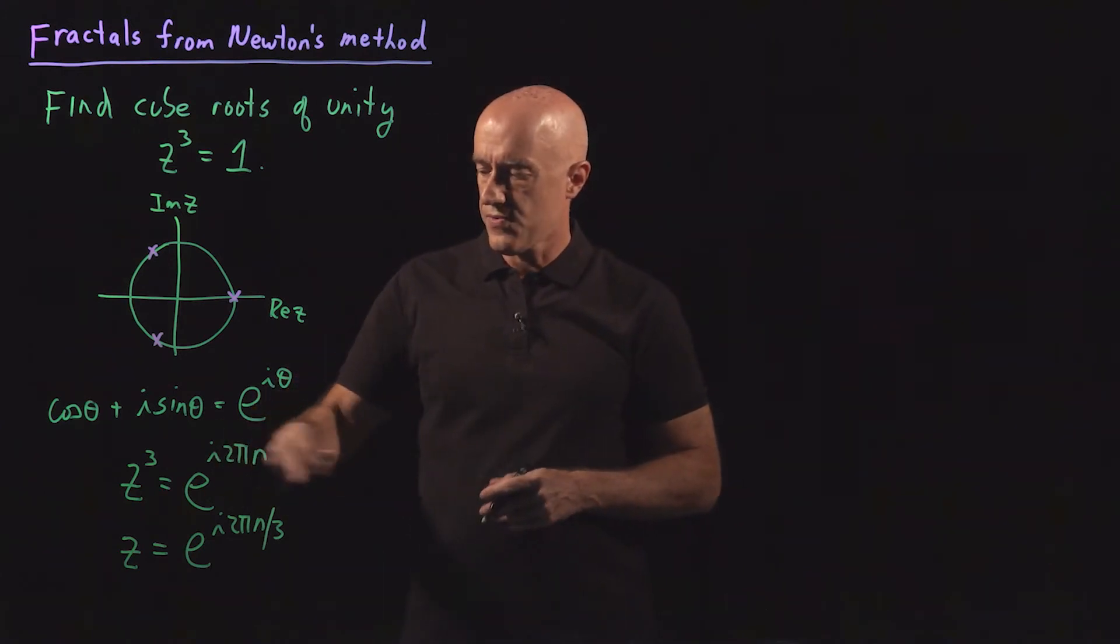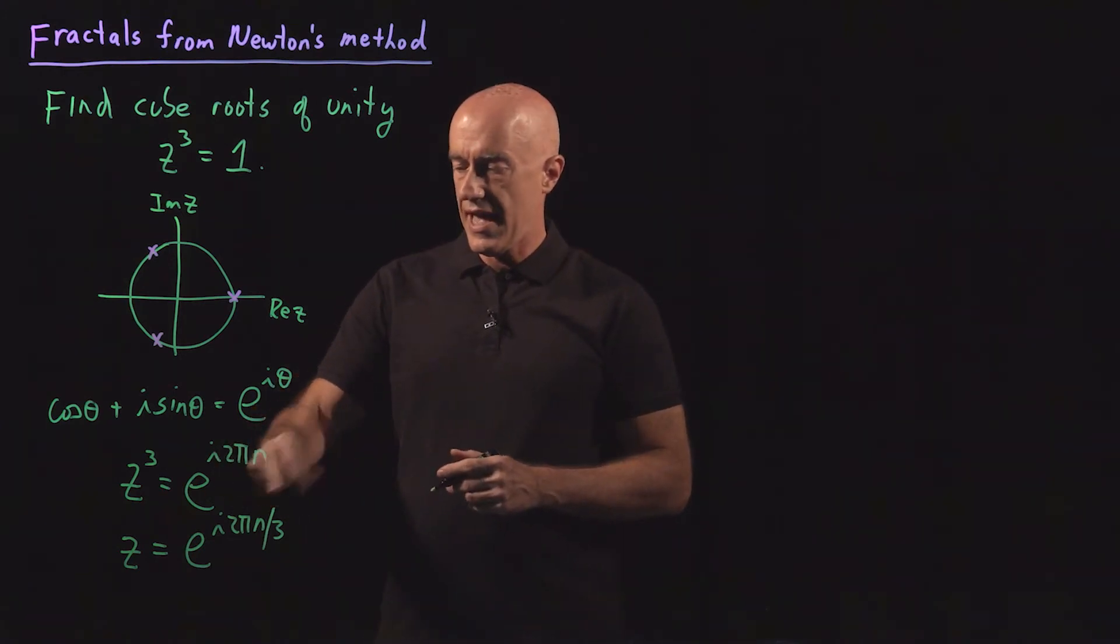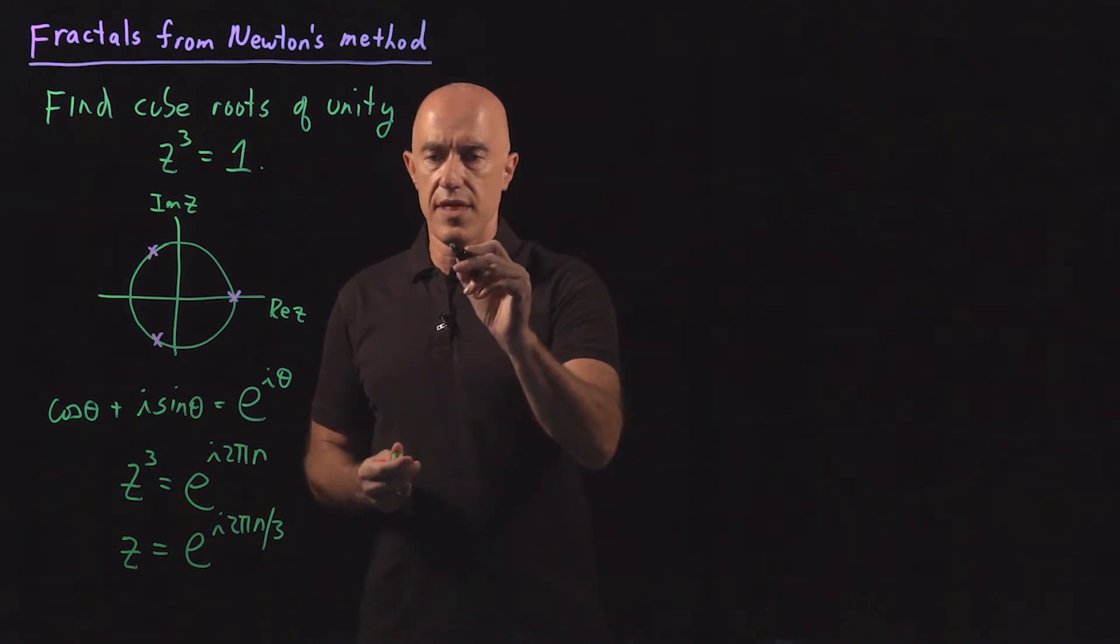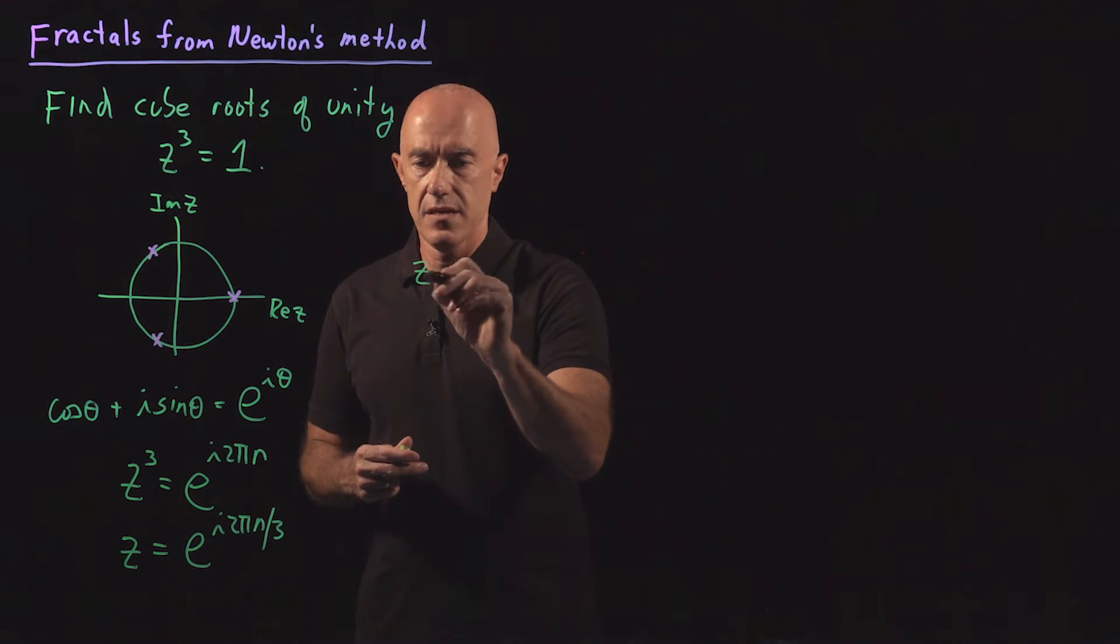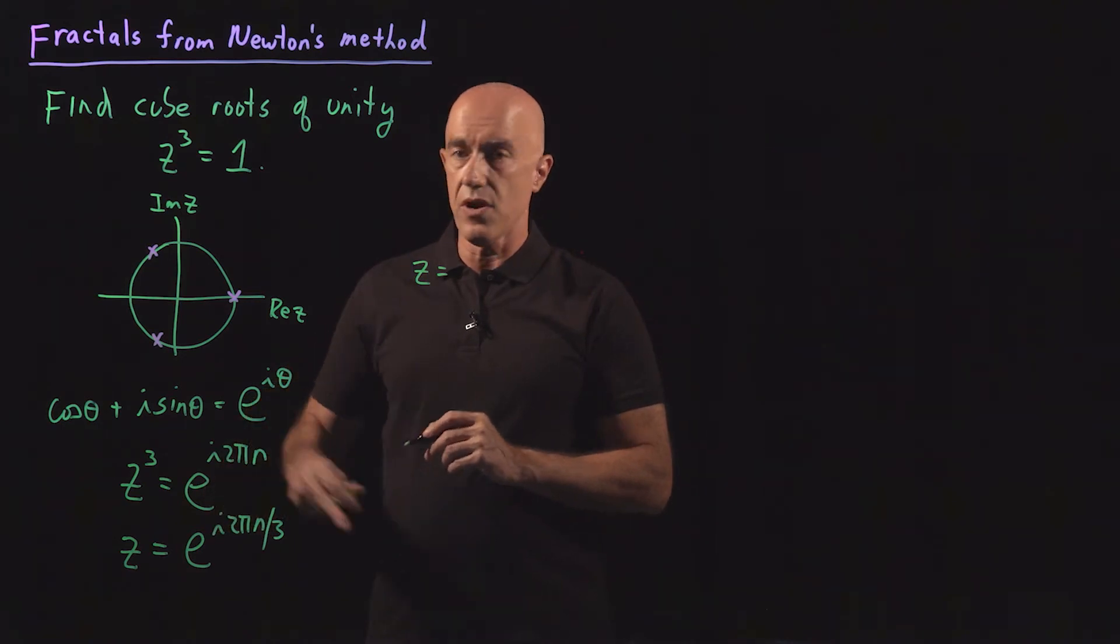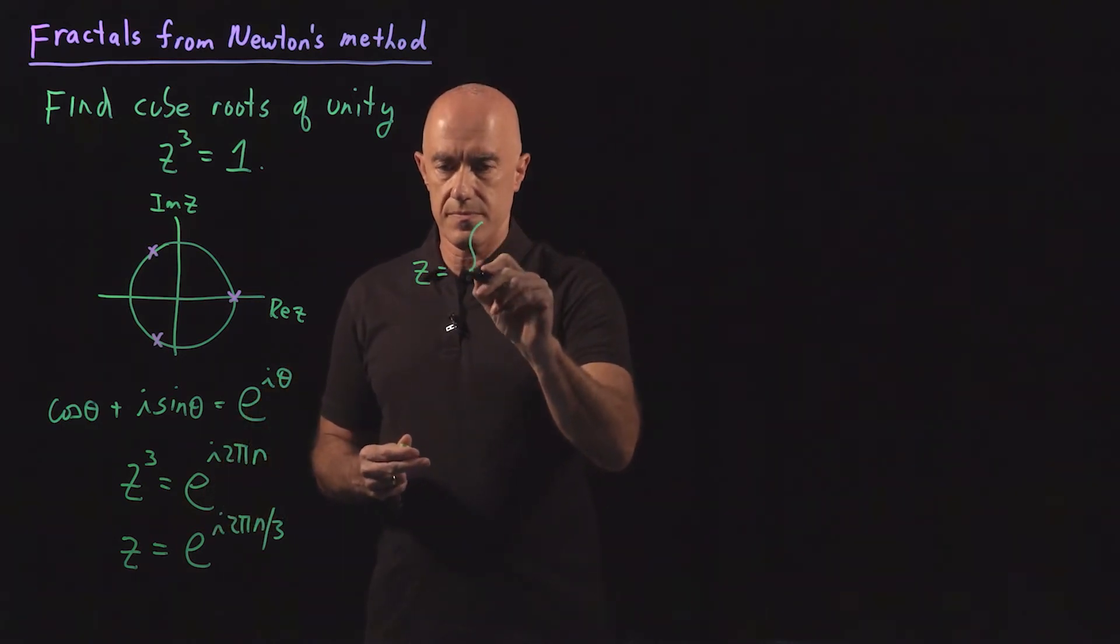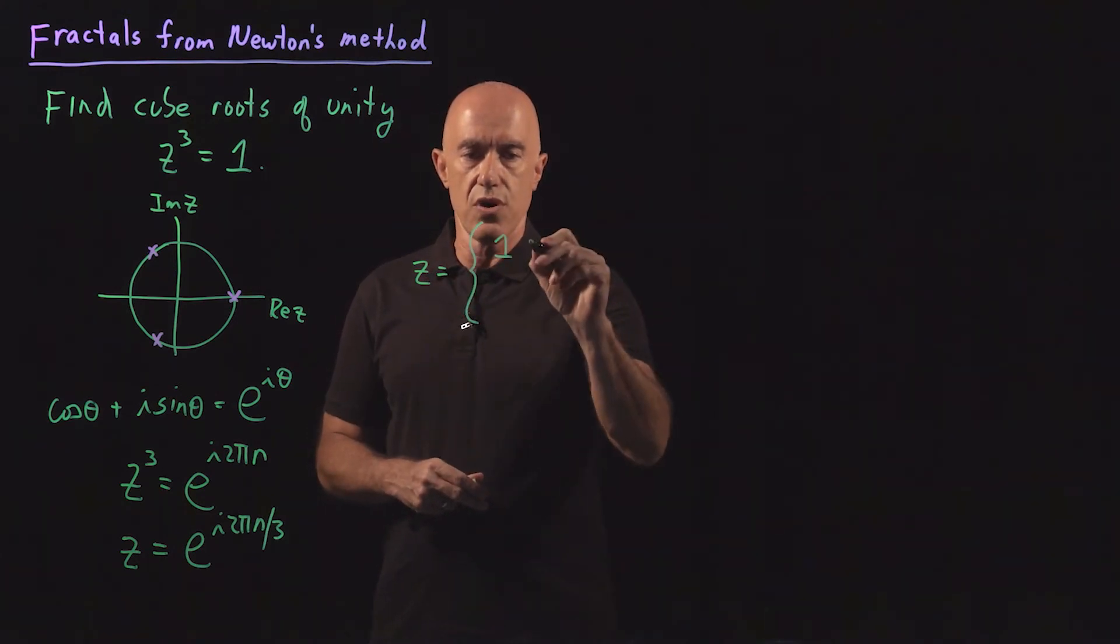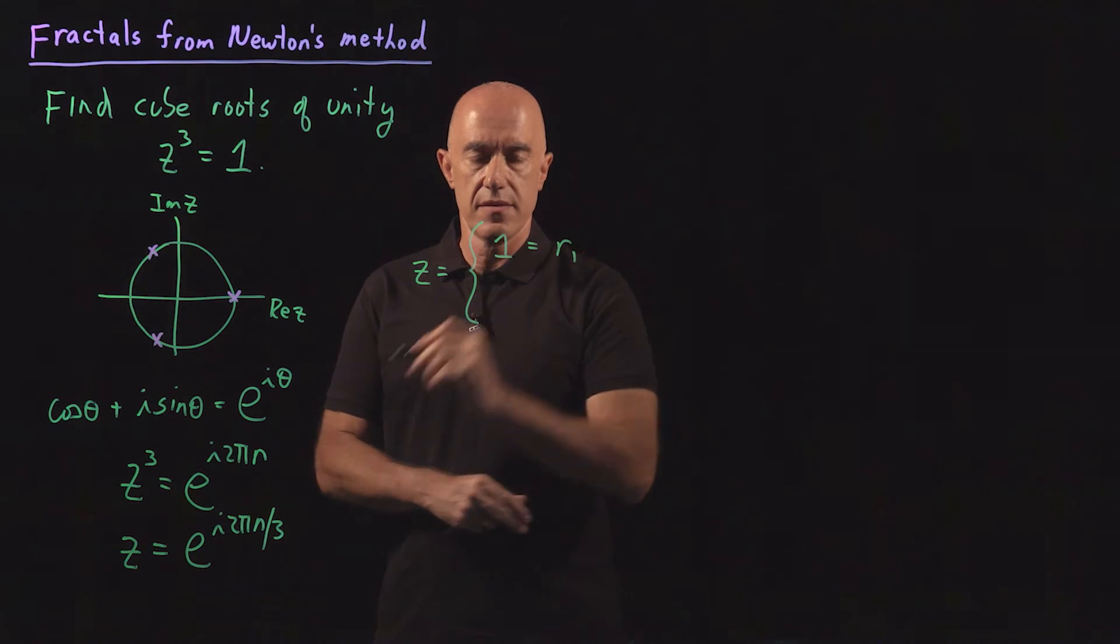There are three unique values here. n equals 0, so the solution would be z equals e to the 0, which is 1. So one of the solutions is 1, we'll call that r1.